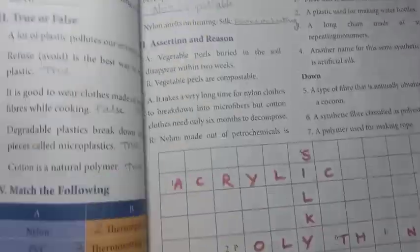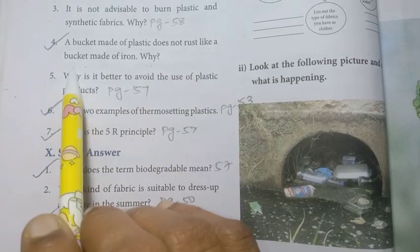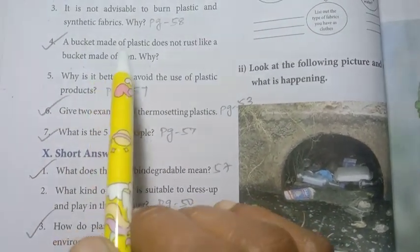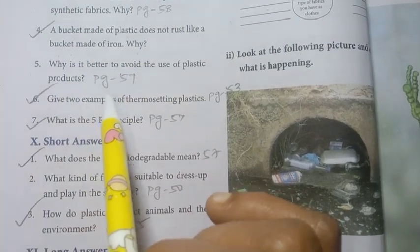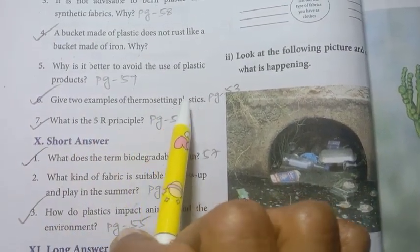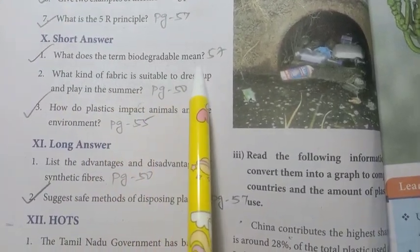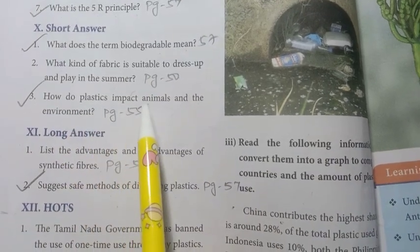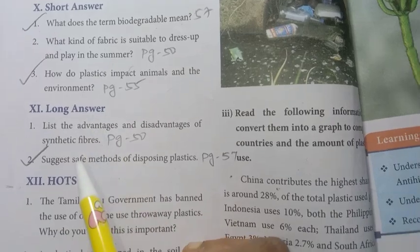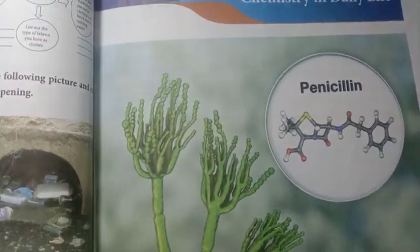Unit 3 is Polymer Chemistry — the chemistry part. On page number 64, the 1-mark and very short answer questions include: A bucket made of plastic does not rust like a bucket made of iron — why? This question appeared in 2020, 2022, and 2023. Give two examples of thermosetting plastics. What is the 5R principle? For short answers: What does the term biodegradable mean? How do plastics impact animals and the environment? For long answers: Suggest safe methods of disposing plastics.